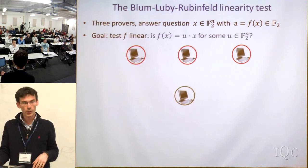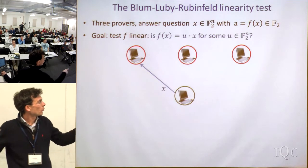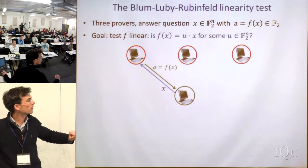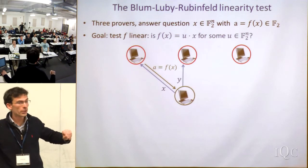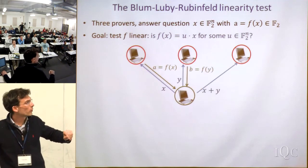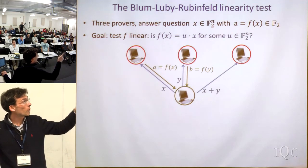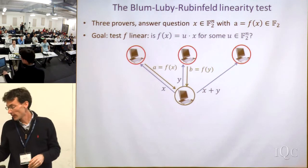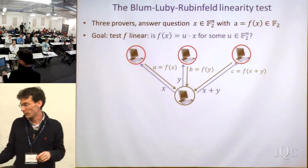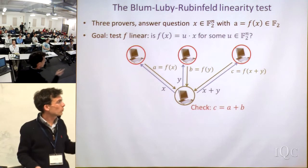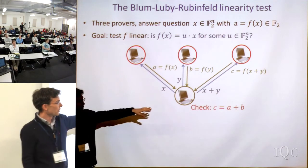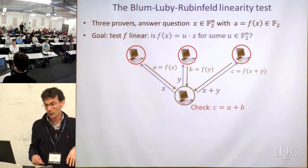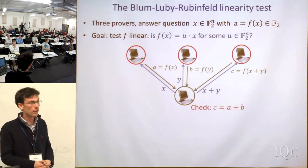The test is simple: send a random question X to the first prover and get answer F(X). Send a random question Y to the second prover and get F(Y). Send the XOR X+Y to the third prover and get F(X+Y). We check that the third prover's answer equals the sum of the first two provers' answers modulo two. If the function is linear, this holds. The BLR theorem says: if the provers succeed with probability 1 minus epsilon, then there exists some U such that F(X) equals U dot X for a large fraction of X.